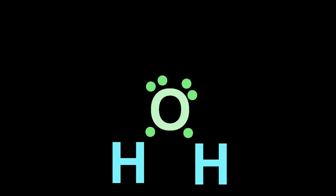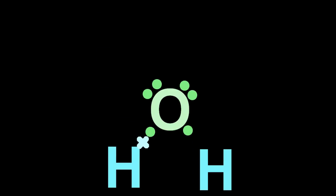Oxygen's in group 16, so it has six valence electrons, represented by those dots. And hydrogen's in group 1, one valence electron, represented by the crosses.